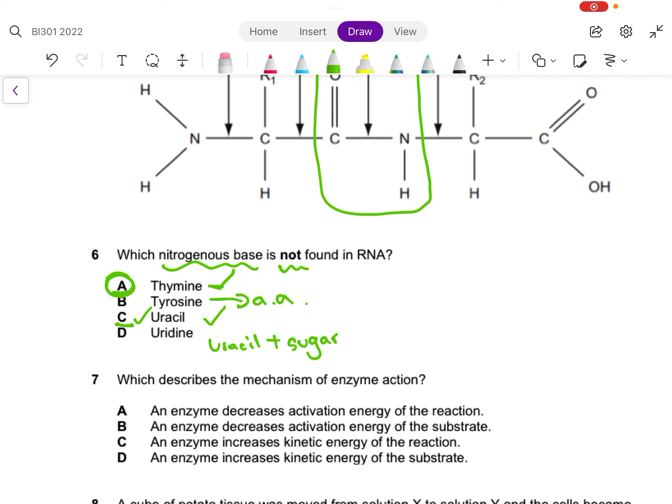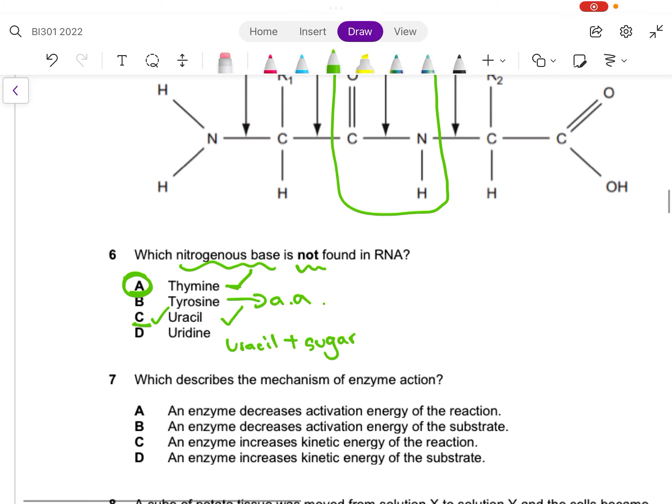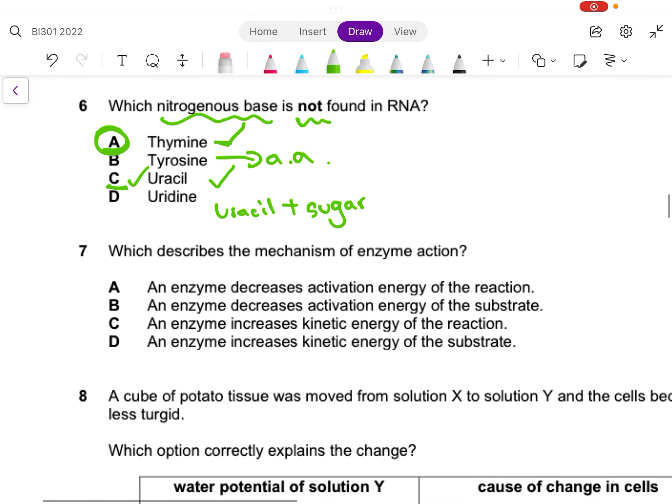Let's go to question seven: which describes the mechanism of enzyme action? Let's look through the options. An enzyme decreases activation energy of the reaction - this is true. An enzyme decreases the activation energy of the substrate - this is not true. It decreases the activation energy of the entire reaction, not just the substrate alone.